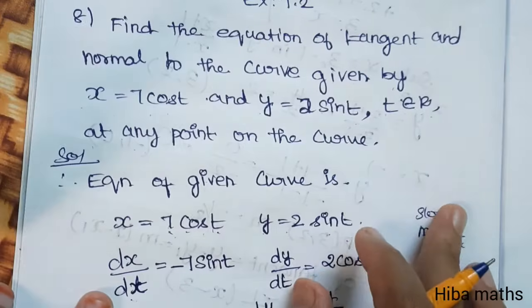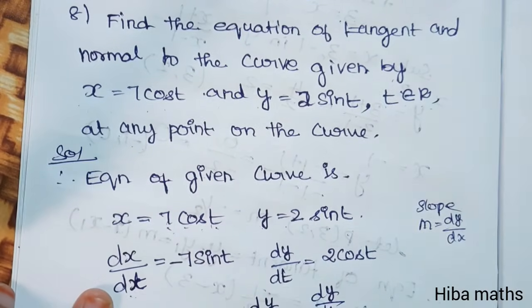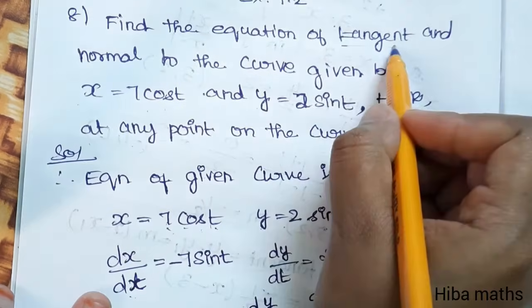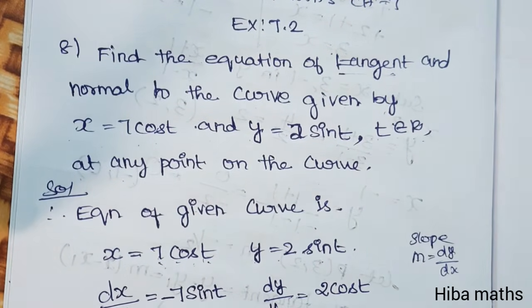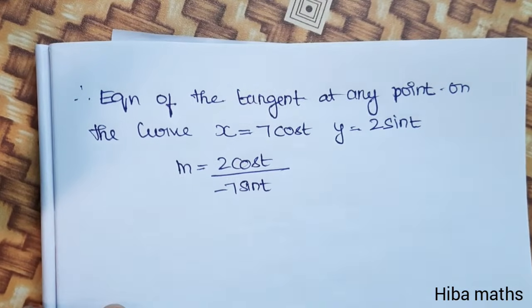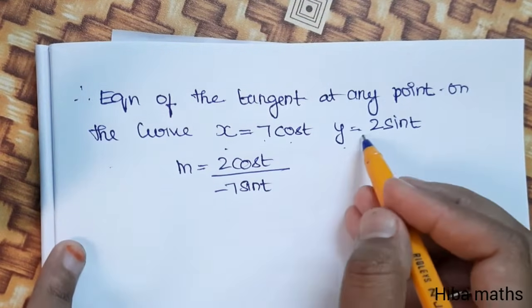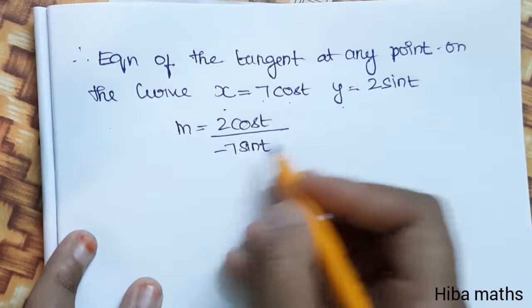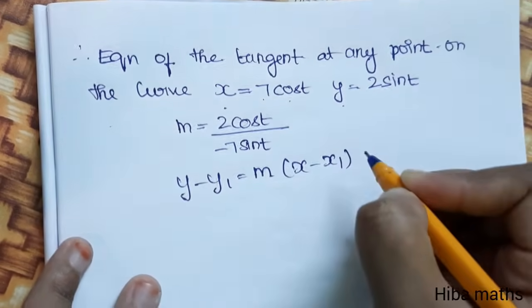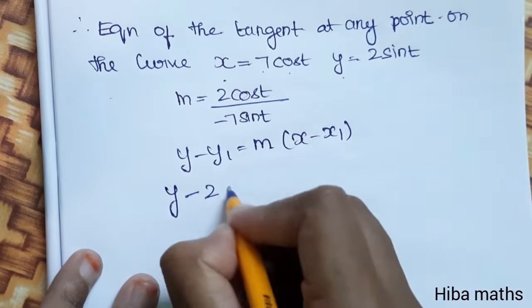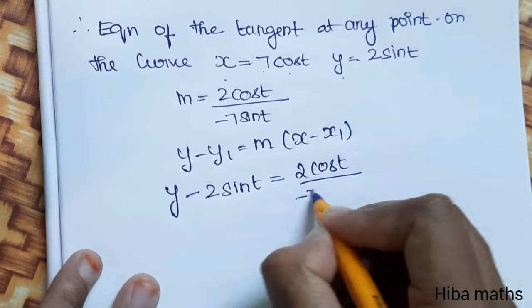What we have been asked is the equation of the tangent at any point on the curve, where the tangent is parallel and the normal is perpendicular. The point on the curve has x-value 7 cos t and y-value 2 sin t. Using the point-slope form: y minus y1 equals m into x minus x1.